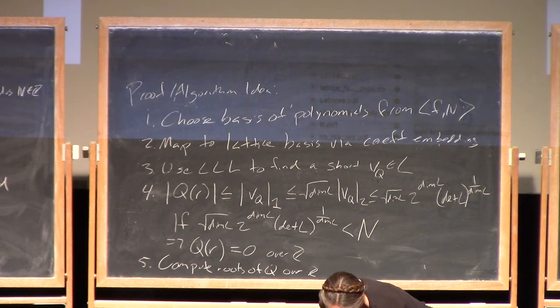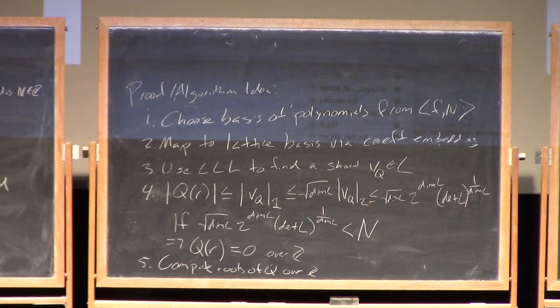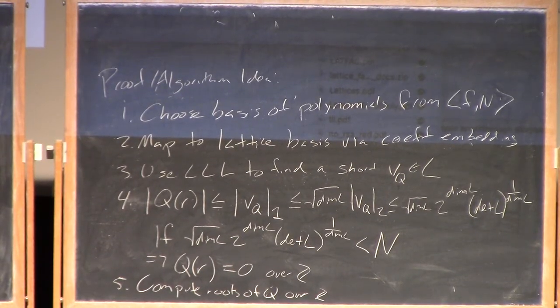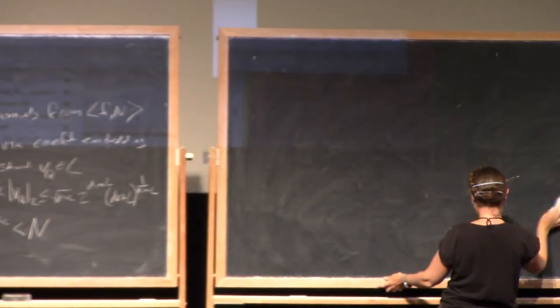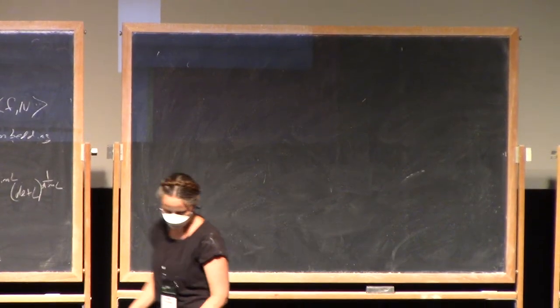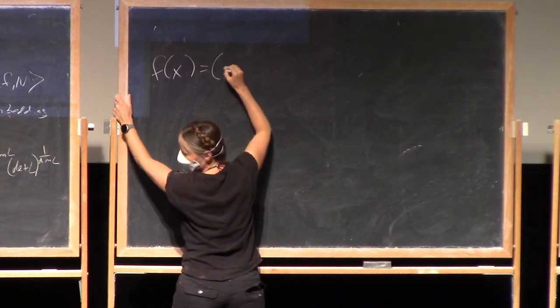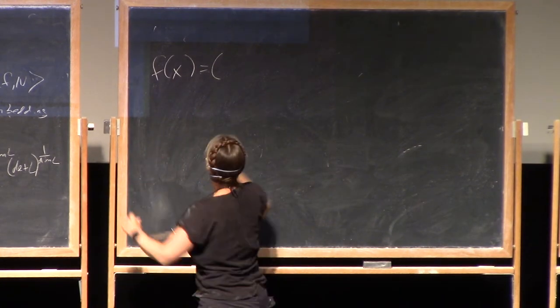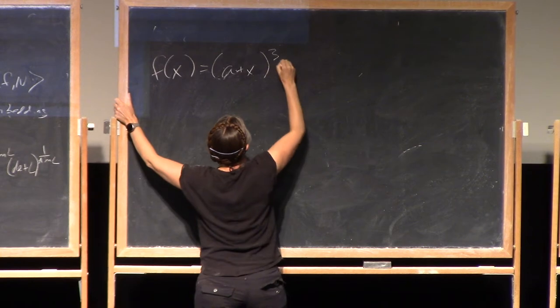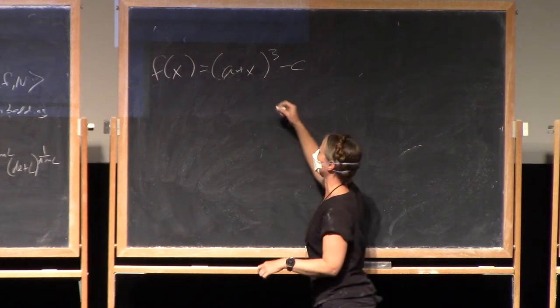Okay, so in this explicit computational example, our input polynomial is, we've got our ciphertext c and our approximation to the message a, and so we have f of x is x plus zero maybe, a plus x cubed minus c, and I know that if I plug in the root swordfish here this is going to be 0 mod n.